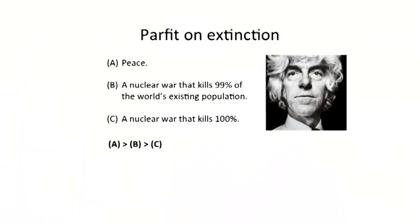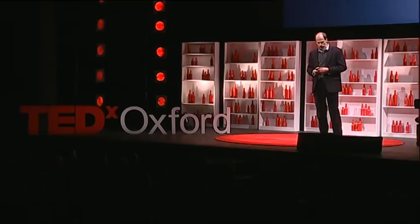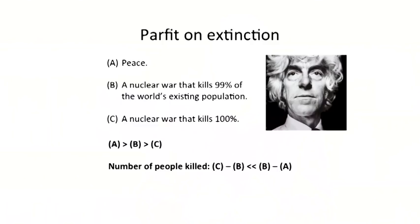But then Parfit asks us to consider a different question: how big is the difference between these different scenarios? If we ask how big the difference is in terms of the number of people killed, then the difference between C and B is much smaller than the difference between B and A. The difference between A and B is, in today's terms, almost 7 billion people, whereas the difference between B and C is just one hundredth of that — 70 million people.